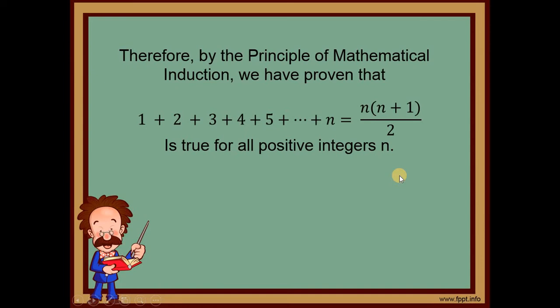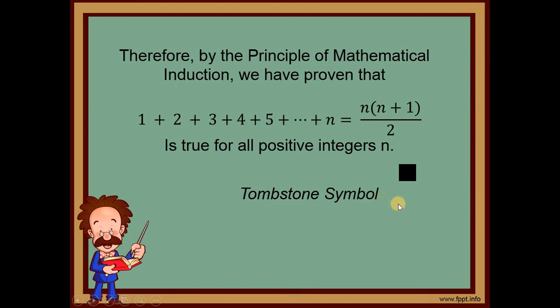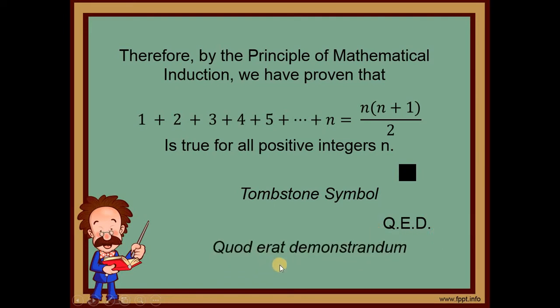To end a proof, there are two ways: using the shaded box called the tombstone symbol, often used in magazines at the end of a statement, or writing QED — which stands for 'quod erat demonstrandum' — meaning end of the proof. We will use QED after every proof going forward.